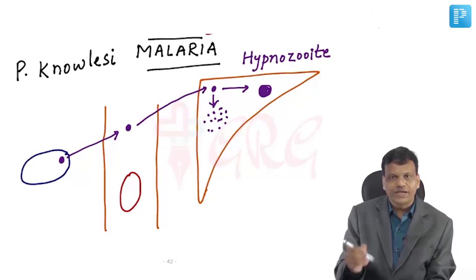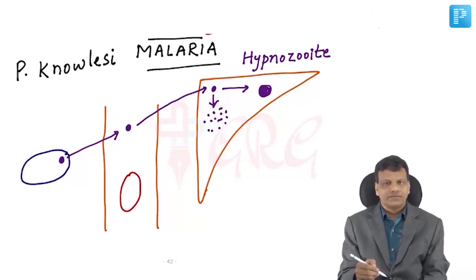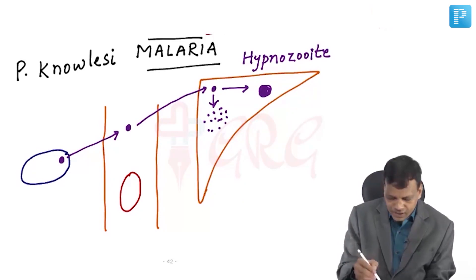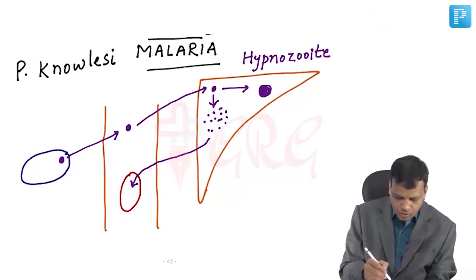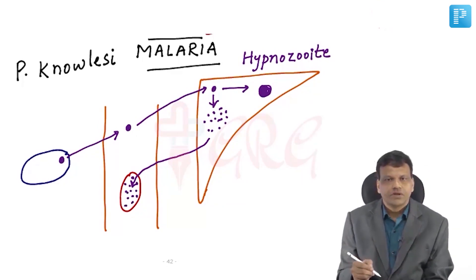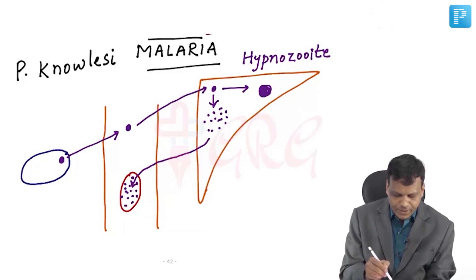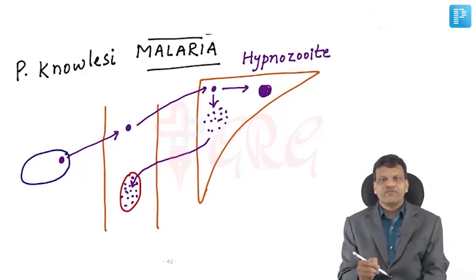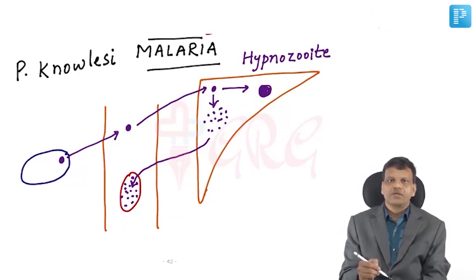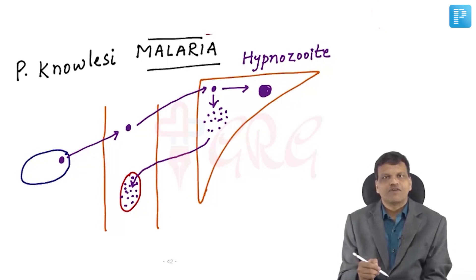Either it can become inactive or it starts multiplying. When it starts multiplying, after some time it will re-enter the blood, but now inside the RBCs, and it continues to multiply within the RBC. When large numbers of parasites have been produced inside the RBC, the RBC ruptures — and it is at this time that the symptoms of malaria appear: fever, chills and rigors correspond to the rupture of RBCs.